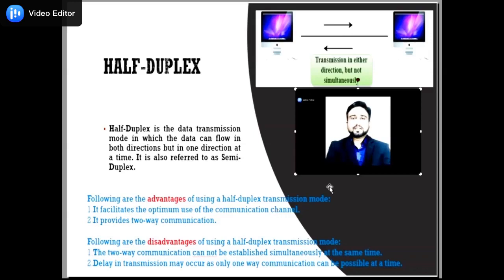The advantages of half-duplex communication: in half-duplex mode, both devices can send and receive data and can also utilize the entire bandwidth of the communication channel during data transmission. The disadvantage of half-duplex mode is that when one device is sending data, the other device has to wait, which causes delay in sending data at the right time.